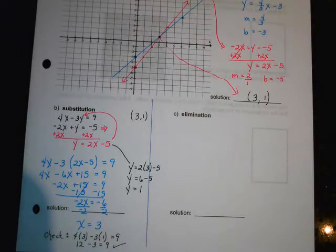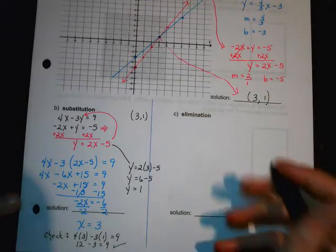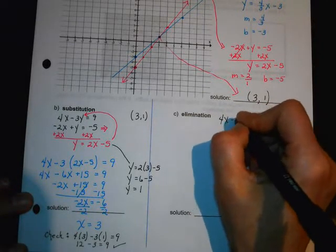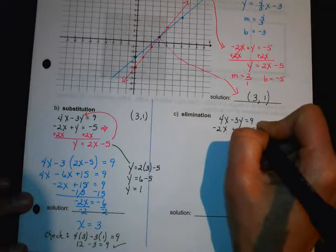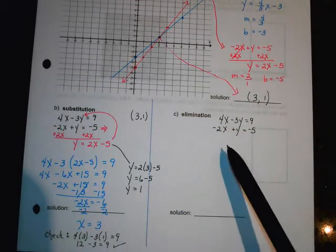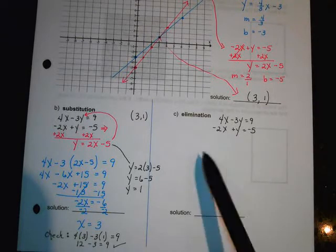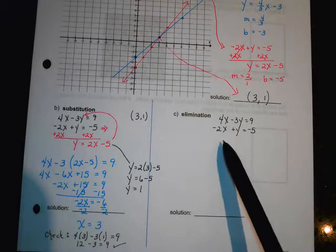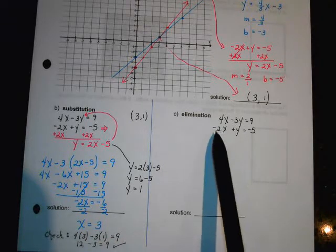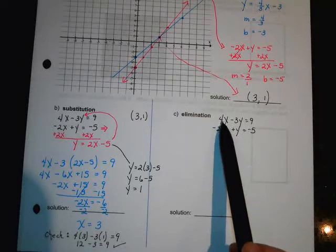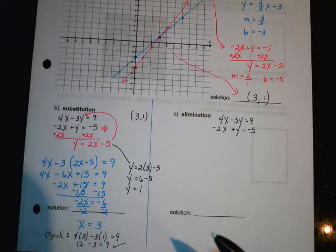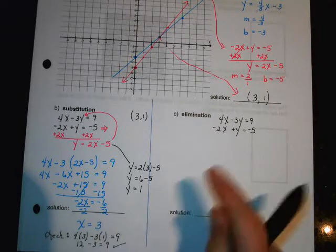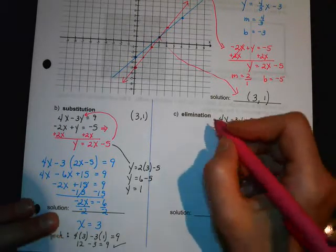And then elimination, let me write this out again. So 4x minus 3y equals 9. Negative 2x plus y equals negative 5. So you remember, for elimination, you want to get the same number but of opposite sign in front of one of the variables. And now this one's up to you, because this is pretty easy. Like if we multiply this by 2, then we'd eliminate the x's. If we multiply it by 3, then we would eliminate the y's. So it's your choice.